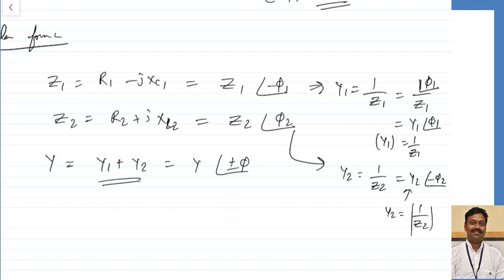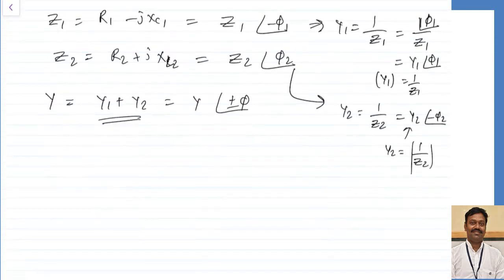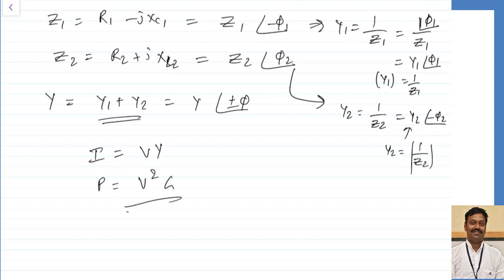Once Y1 and Y2 are computed, total Y equals Y1 plus Y2 at the combined angle, which can be plus or minus. Once Y is obtained, current I equals V into Y, and power P equals V squared into G. This is how the admittance method works for solving parallel AC circuits.